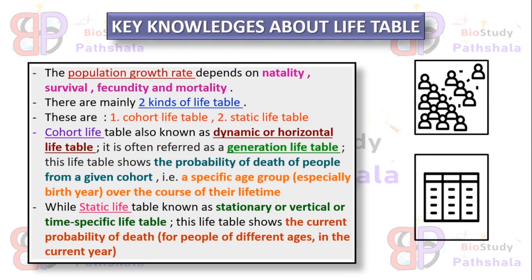The life table may be of two kinds: one is a cohort-based life table and one is a static life table. The cohort life table is based on a specific age group and states the probability of death of people from a given cohort. It is also known as a dynamic, horizontal, or generation life table. The static life table is known as a stationary, vertical, or time-specific life table, as it gives the death probability of different ages for a certain time.